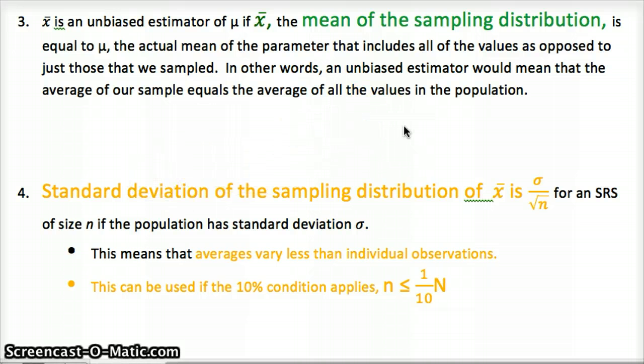Standard deviation. Now this is different for a sample mean. Instead of using p times 1 minus p over n, all square rooted, the standard deviation of the sampling distribution of x-bar is the standard deviation of the population, that's what this is up here, divided by the square root of the sample size. So again, the larger the sample size, the smaller the standard deviation. This means that averages vary less than individual observations. So an individual observation would have a value of 1, whereas averages are going to have smaller standard deviation.